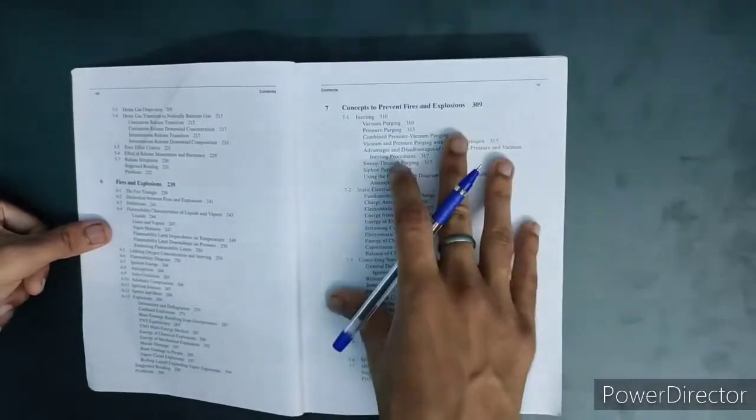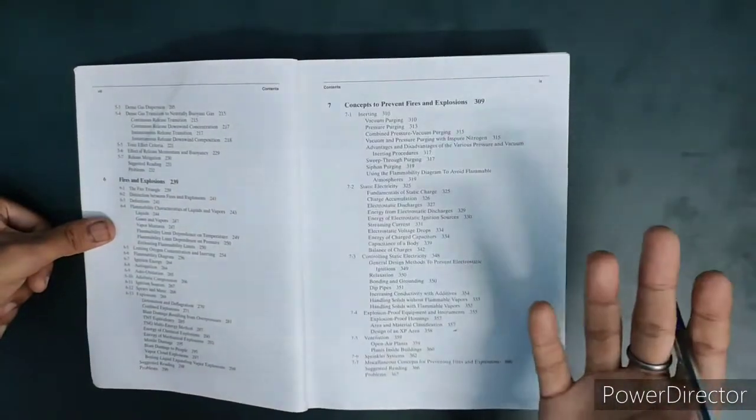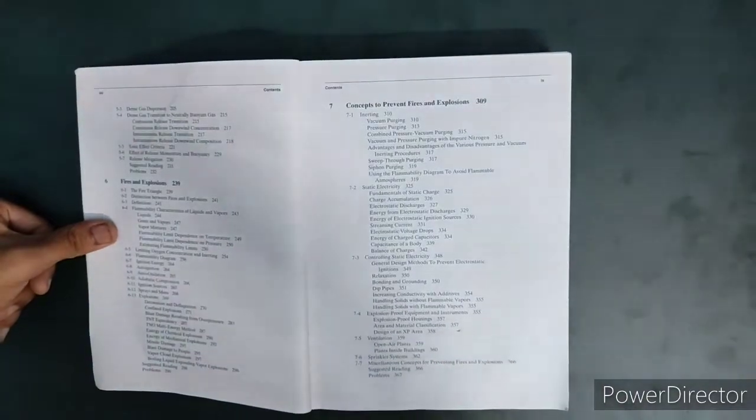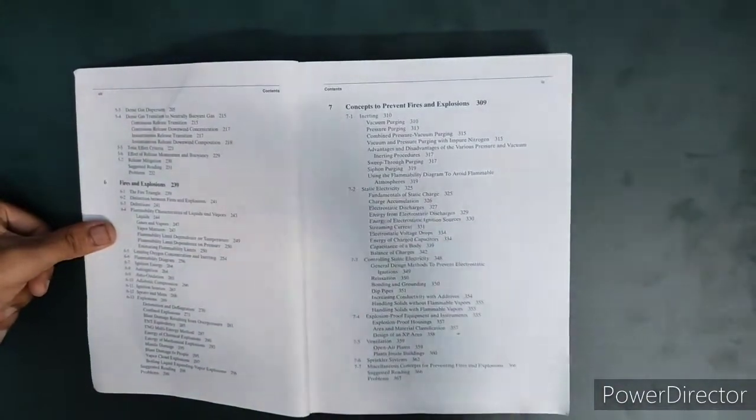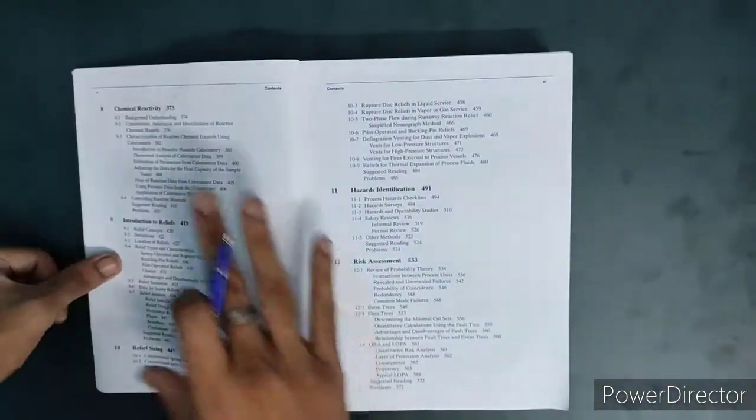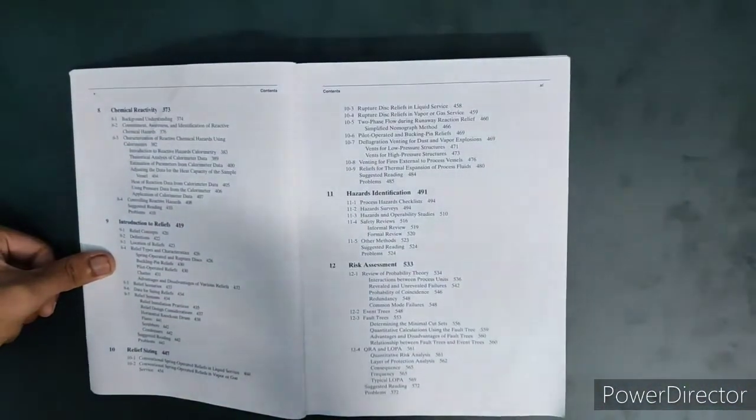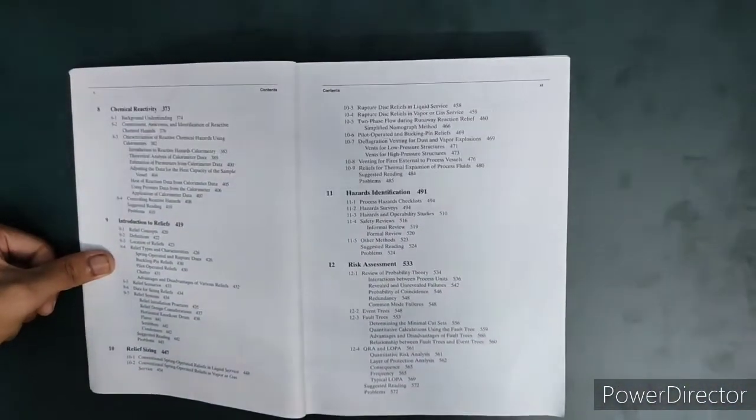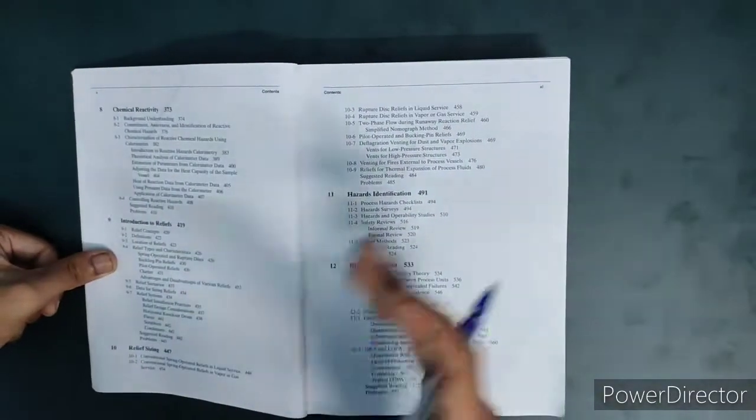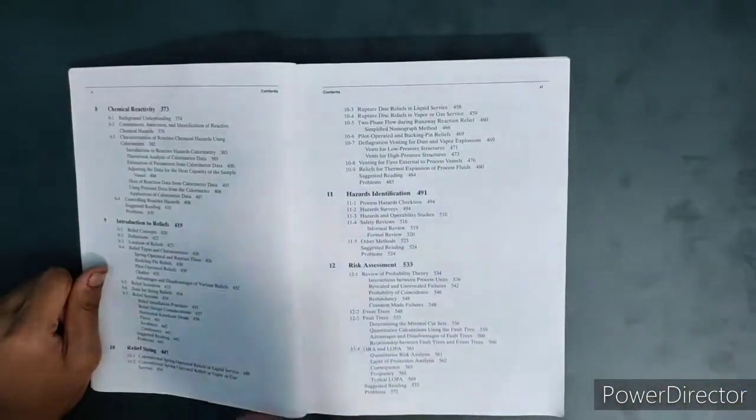They are going to tell you a lot of technical ways, a lot of technical strategies which you can implement at your workplace to prevent fire and explosions. Next is your chapter number eight with regards to chemical reactivity - how to store the chemical properly and with regards to the compatibility charts. Introduction to reliefs, that is your chapter number nine, in which you are going to study about the relief systems, first of all the basics.